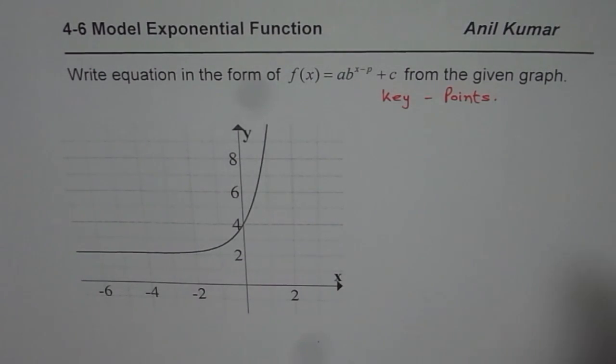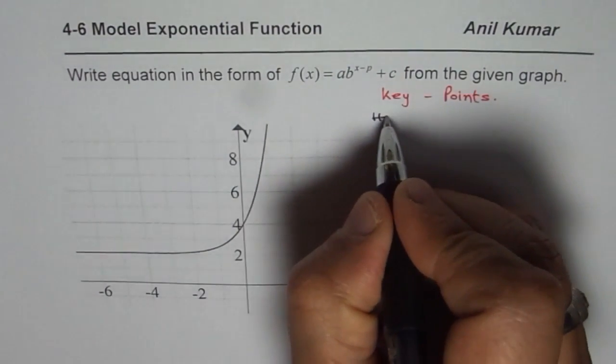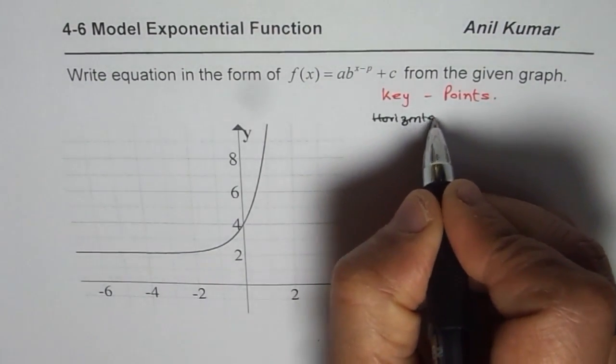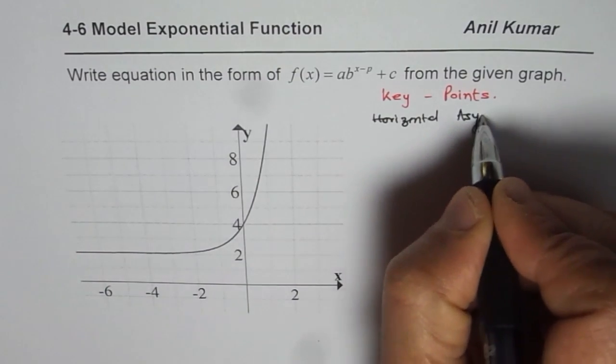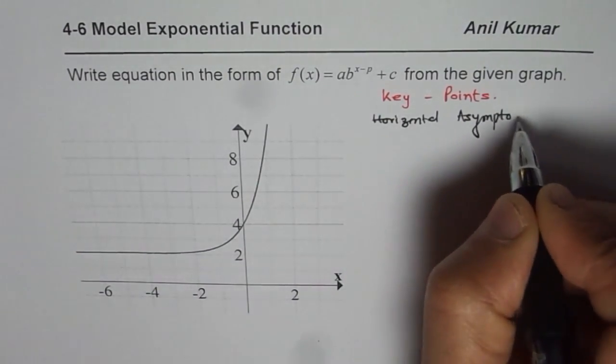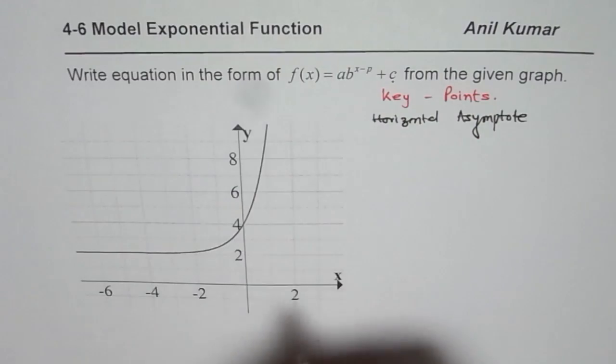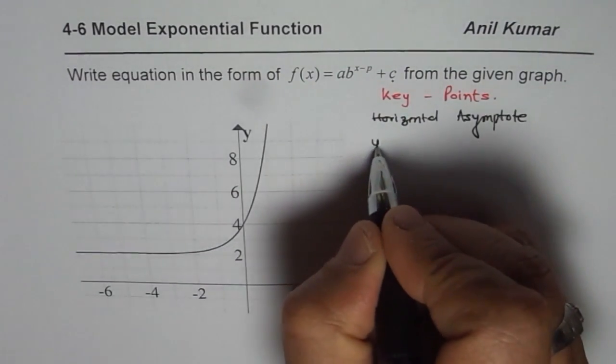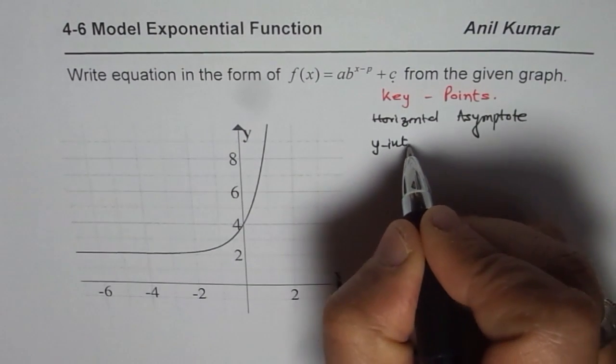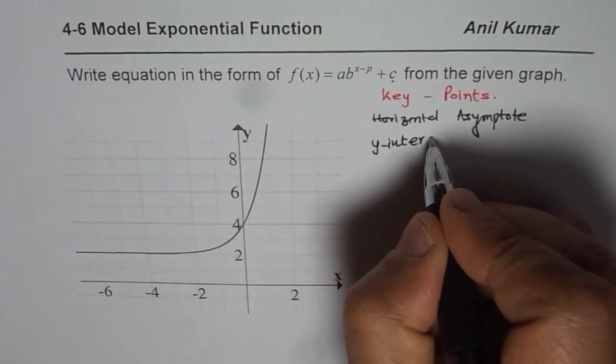So key points are: first, always look for the horizontal asymptote. That gives you the value of c. And then we should look for the y-intercept, that is one of the most essential key points to look into.